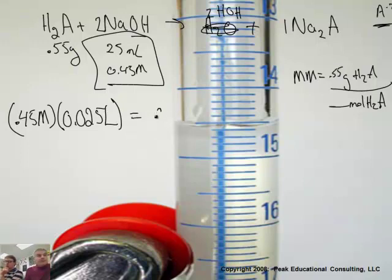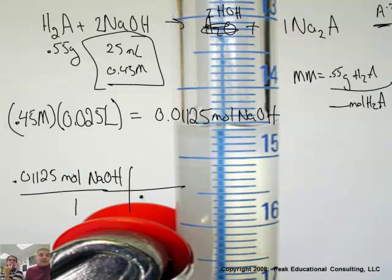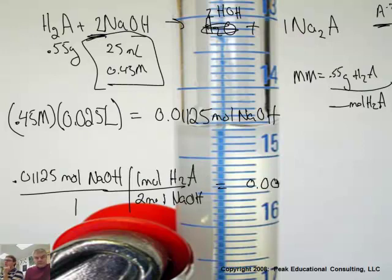So stoichiometrically, I'm going to take M times V right here. So 0.45 molar times 0.025 liters. Again, I'm converting to liters quickly in my head. Yep. 0.01125, and that's moles of sodium hydroxide. So I'm going to pull that down here and take 0.0125 moles of NaOH over 1. I'm going to say, now watch this, two moles of NaOH because of the 2 in the balanced equation up here is 1 mole of H2A. So divide by 2 and you get 0.005625 moles of H2A.